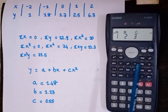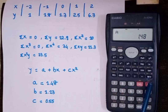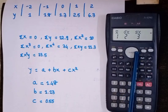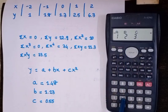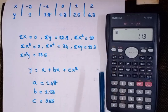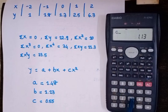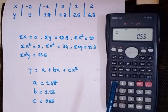For the value of a, press 1 then equals — getting 1.48. Then press Shift 2, next, next, press 2 then equals — the value of b is 1.13. Then Shift 2, next, next, press 3 then equals — the value of c is 0.55.